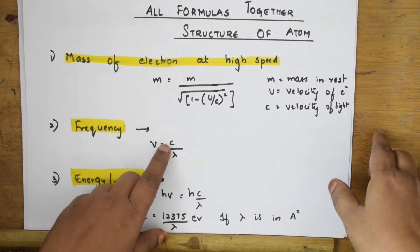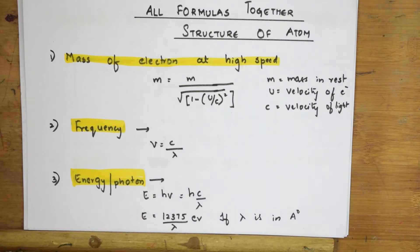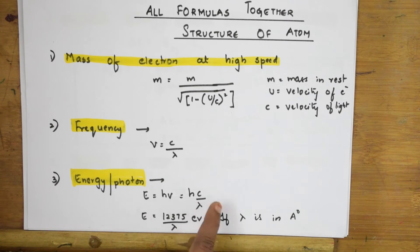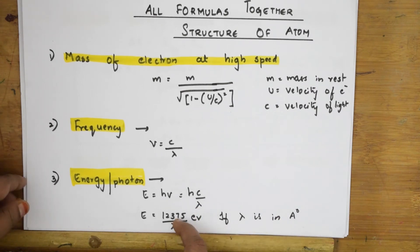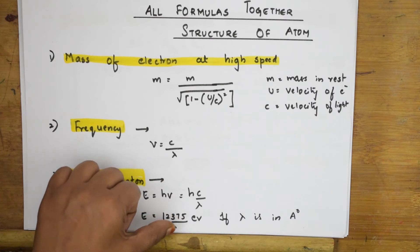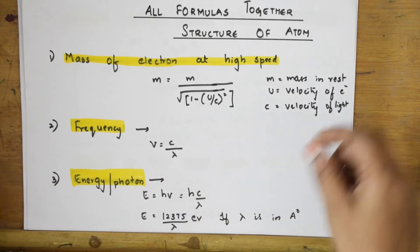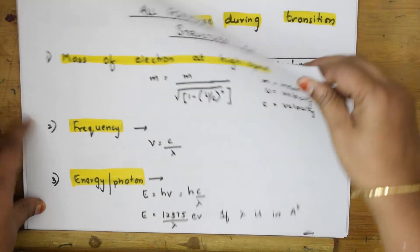When you need to find the energy of a photon, the formula is E = hν, and since ν = c/λ, you can substitute accordingly. If the wavelength λ is given in angstroms, you can directly use the formula: E = 12375 / λ (in electron volts). Note this formula and apply it directly to numericals.